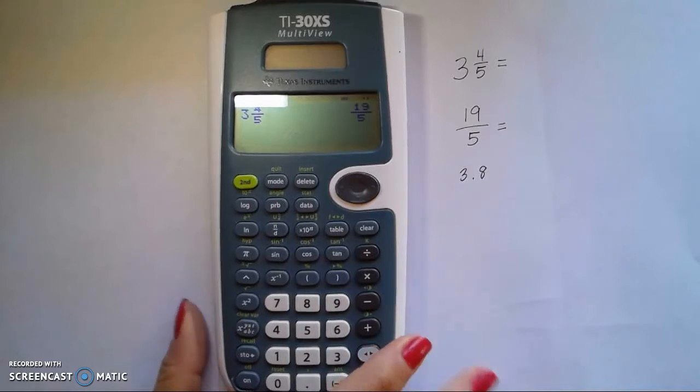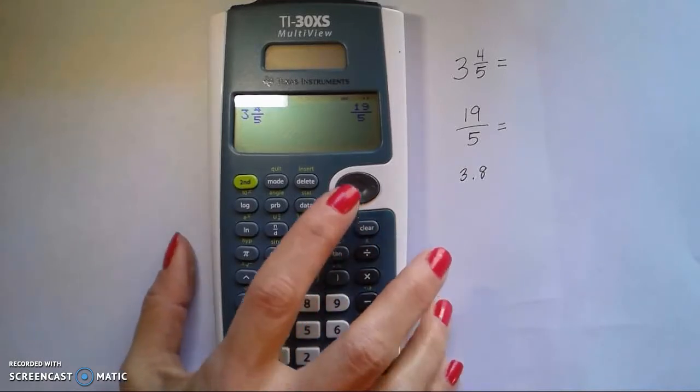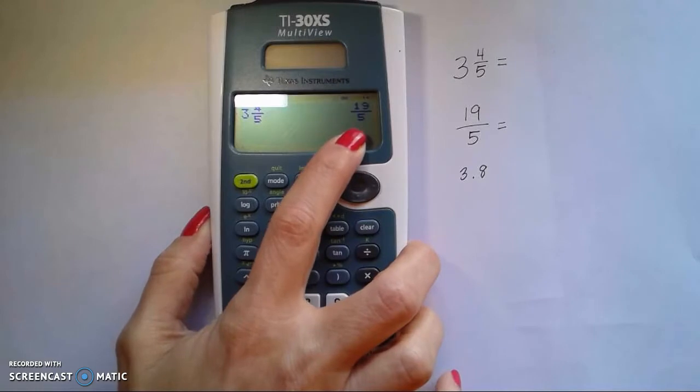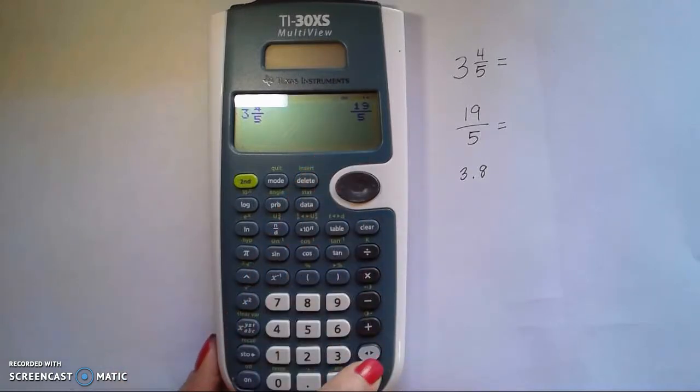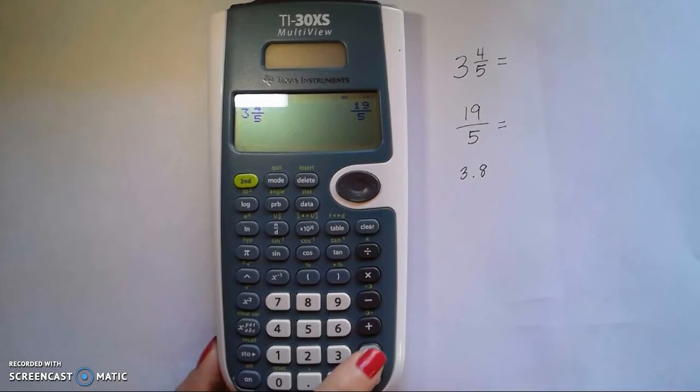This gives us the mixed number 19 over 5. To convert this now to a decimal, we're just going to click these arrow keys that is located just above the enter key. Clicking this gives us 3 and 8 tenths which is 3.8. Thank you.